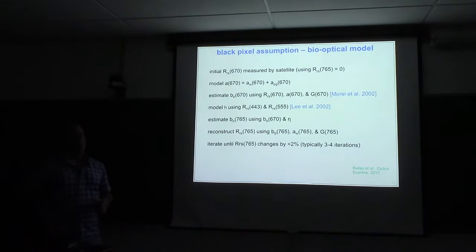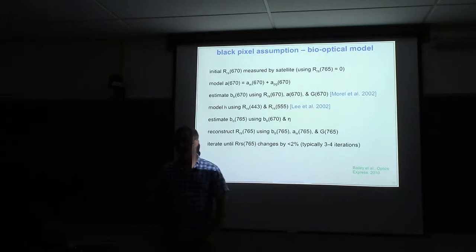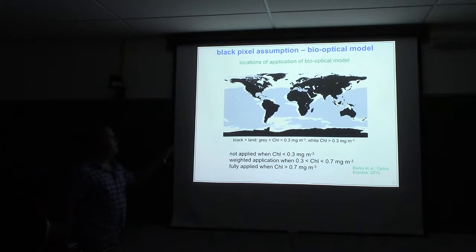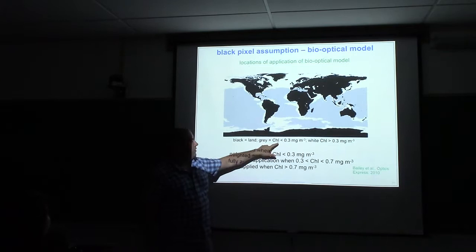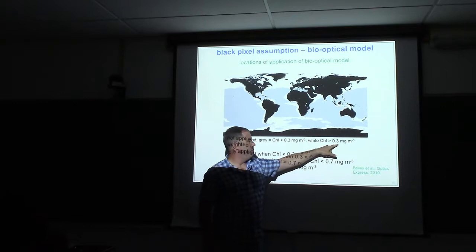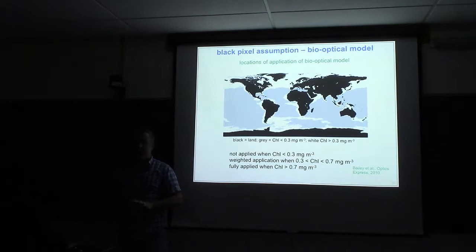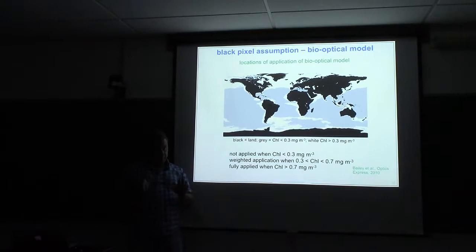We iterate until this value stops changing, which is usually three to four iterations. So where is this applied? Here is a global map. Land is in black. Gray is where chlorophyll is less than 0.3 micrograms per cubic meter, and white is where it's greater than 0.3 micrograms per cubic meter. Anything that is in gray, this correction is not applied. So this gives you a spatial distribution of where the black pixel assumption actually fairly well holds up.